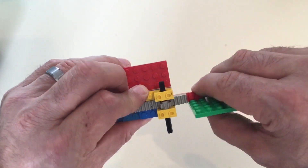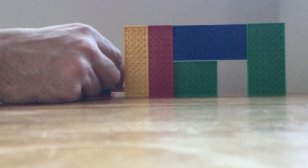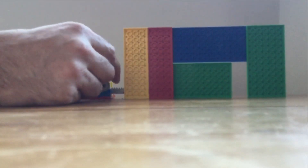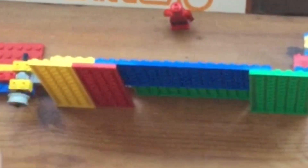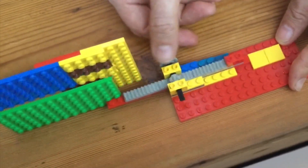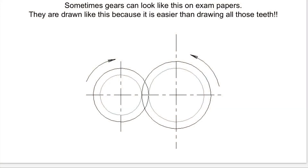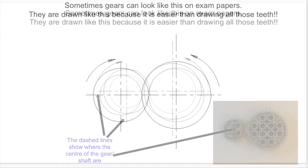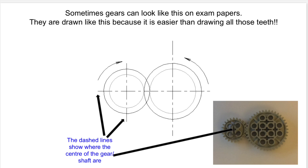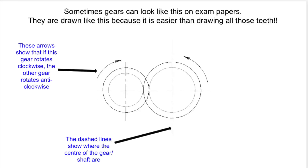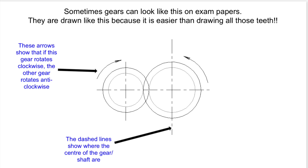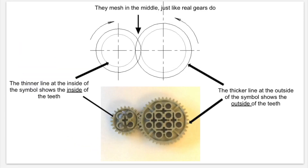Rack and pinion mechanisms can be used on car steering and on sliding things such as gates or doors. In the Lego model I've built — a sliding gate — I'm actually turning the input by hand, but in reality this will probably be a motor. The mechanism itself turns rotary motion into linear motion. An exam tip: questions will often simplify how gears are drawn, showing them as two concentric circles rather than drawing all the teeth. Broken lines show where the centres of the gear shafts are, and arrows show the direction of rotation. Pay close attention to where the gears mesh in the middle, and notice how the different types of line overlap to show how the teeth mesh.